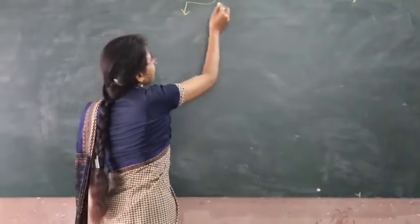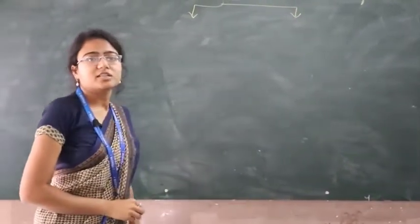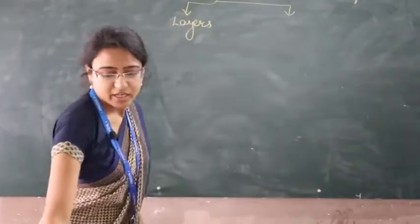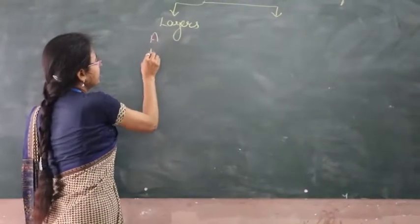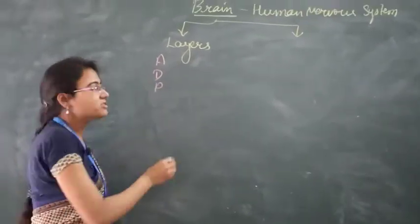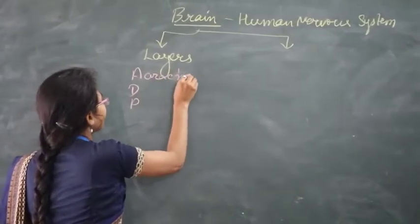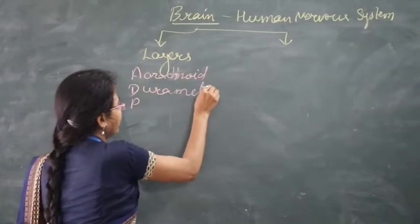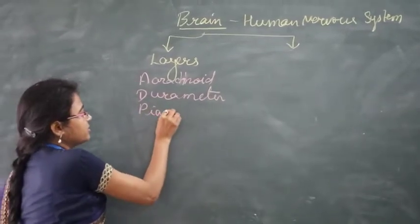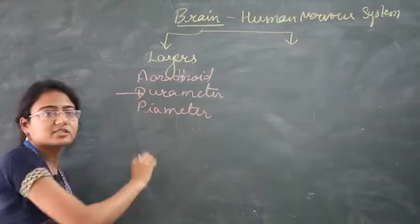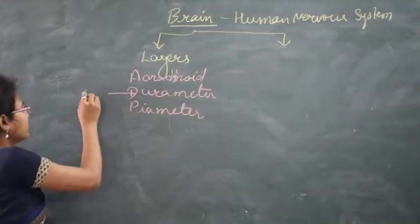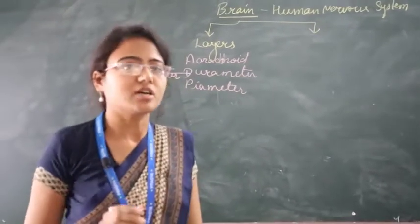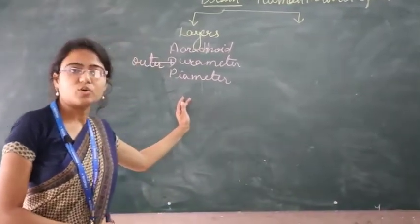The brain is a soft organ of the body and is protected by three meningeal layers. The layers of the brain are remembered by ADP: A means arachnoid, D means duramater, and P means piamater. The duramater is the outermost layer of the brain. The brain is protected inside the skull, and the part of the skull in which the brain is protected is known as the cranium.